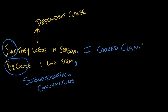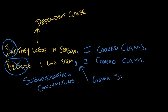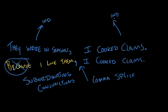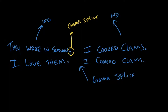So these can't be sentences on their own because of words like 'since' and 'because.' Now, if we took out the words 'since' and 'because,' then we would have two independent clauses: 'They were in season, I cooked clams' and 'I love them, I cooked clams.' This creates a new kind of error called the comma splice. We've got our independent clause here, our independent clause here, and a comma in between — and that is a comma splice. You can't connect two independent clauses with just a comma.